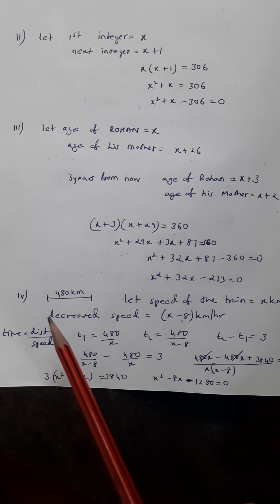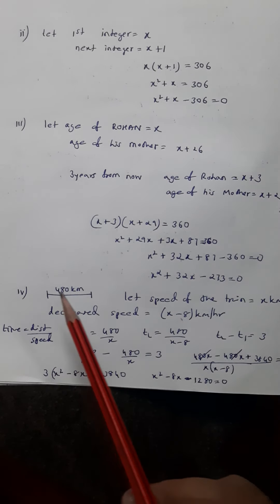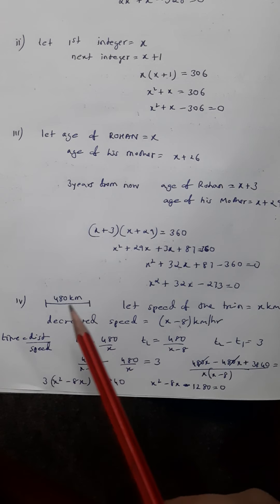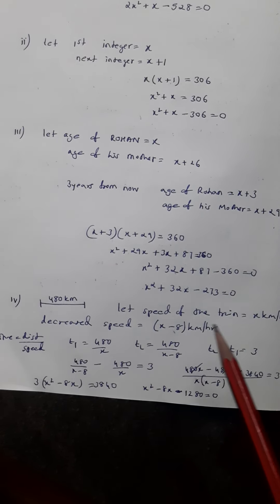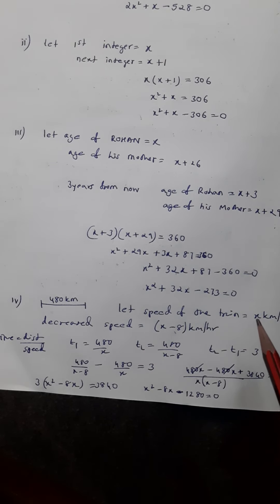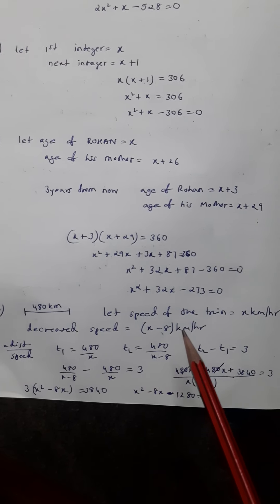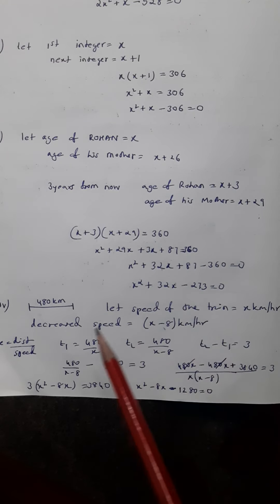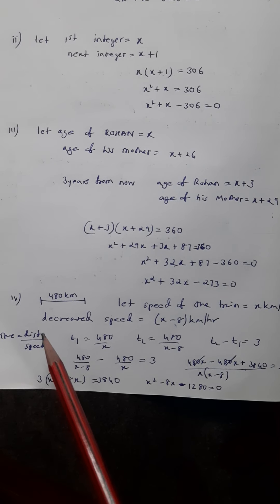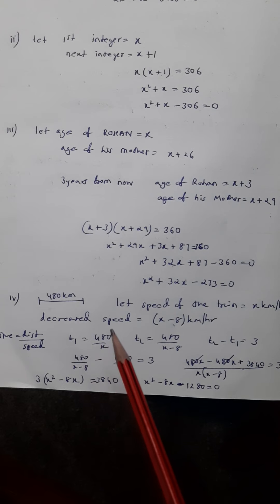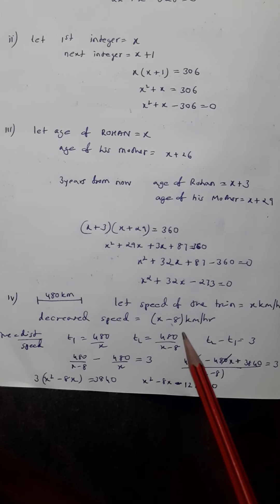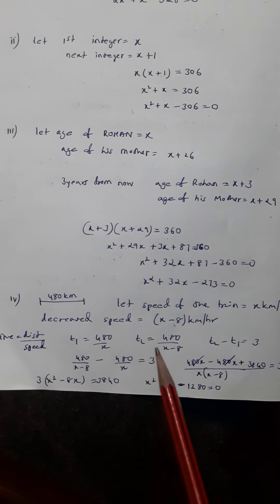Now the last part — please mark this question important. The distance is 480 kilometres, which is always constant. The speed of the train is decreased by 8. Let us assume the original speed is x, so the decreased speed becomes x minus 8. Using time equals distance upon speed: time T1 is 480 by x, and time T2 at the lower speed is 480 by x minus 8.